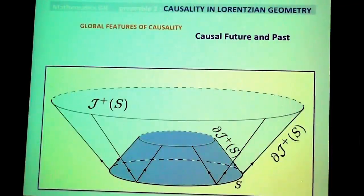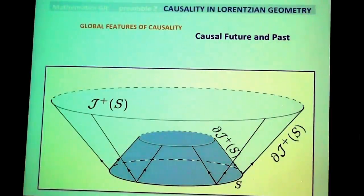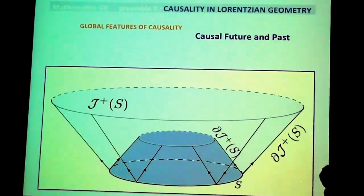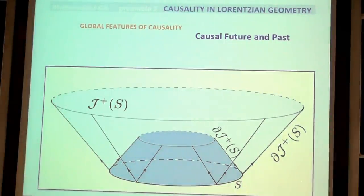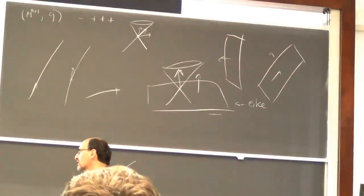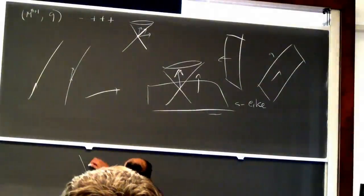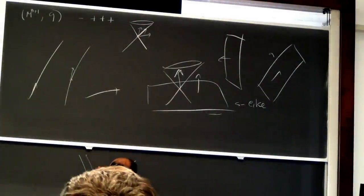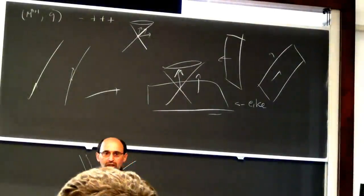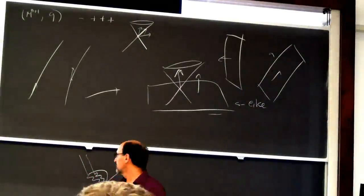More interesting is to talk about the causal future and past of sets. Given a set, the causal future of this set consists of all points which can be joined to the original set by a causal curve. As an example, consider a two-surface in Minkowski space — the simplest Lorentzian geometry. The causal future of this surface consists of two branches — two null hypersurfaces — and these boundaries are perpendicular to the original set.